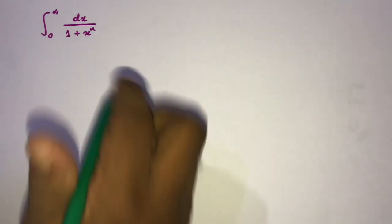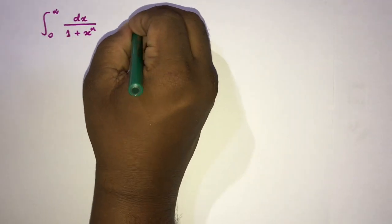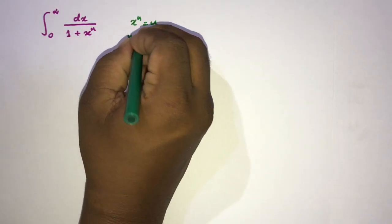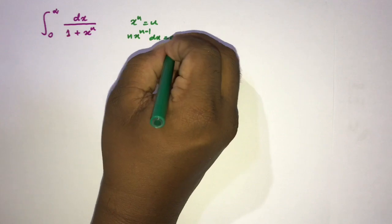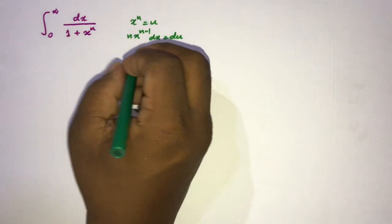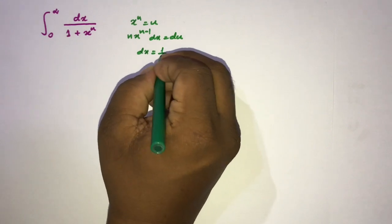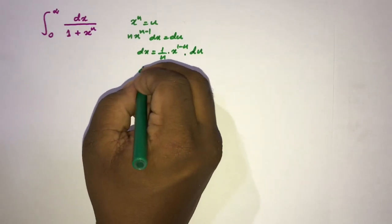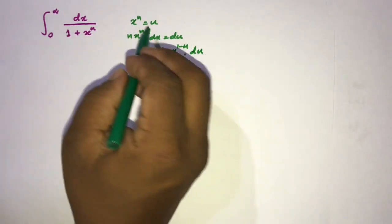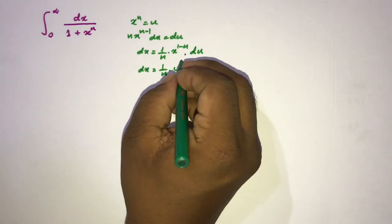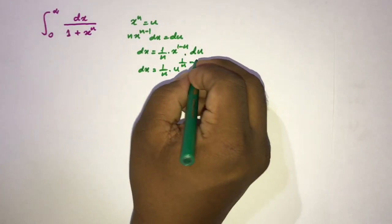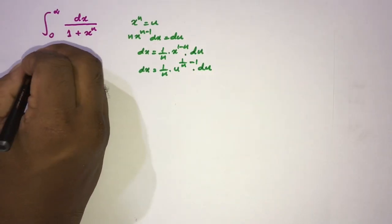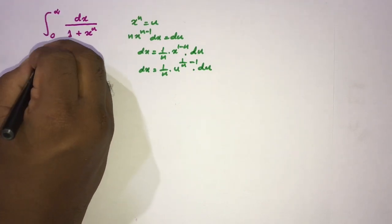For the first method, I will take the substitution x^n = u. Differentiating, we get n·x^(n-1) dx = du. Isolating dx, we have dx = (1/n)·x^(1-n) du, which equals (1/n)·u^(1/n - 1) du, since x = u^(1/n). The limits remain 0 to infinity after substitution.